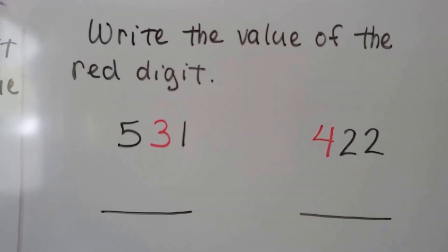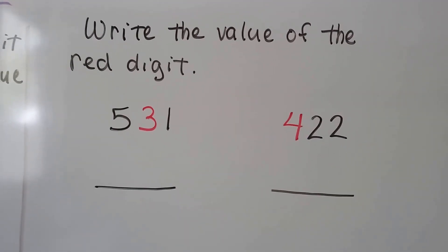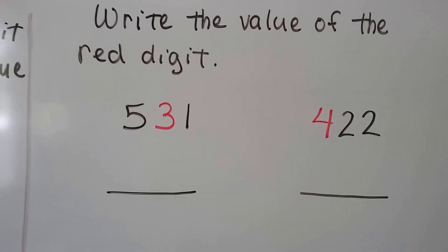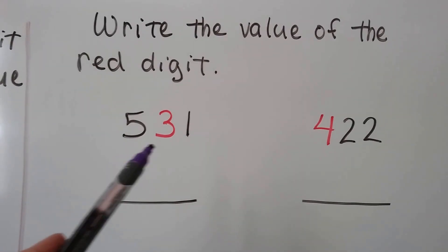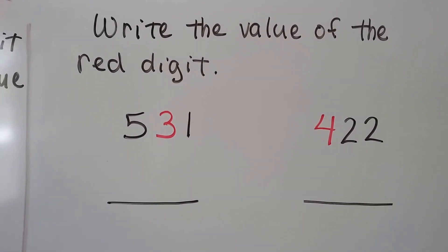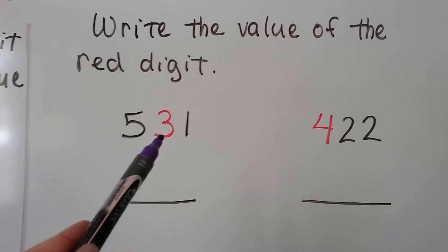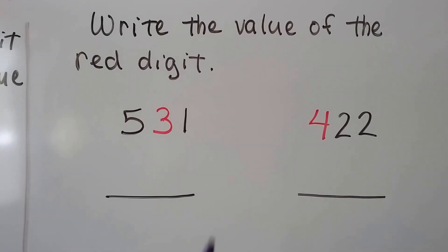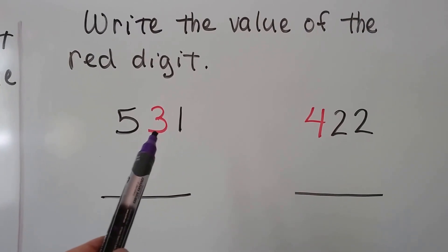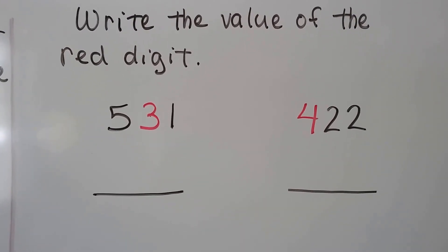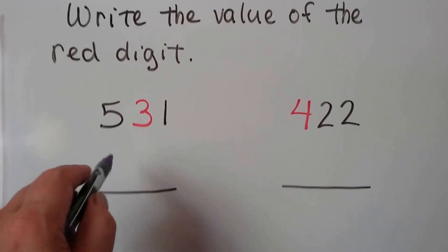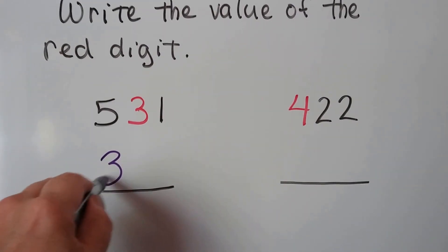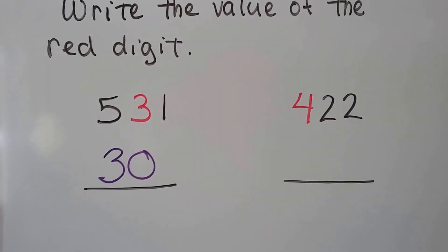Let's see if we can write the value of the red digit. What's the value of the red digit? We have a 3 here, and which place value is it in? Here's the ones place, and that's the tens place. So if we have a 3 in the tens place, then the value of it is 30.